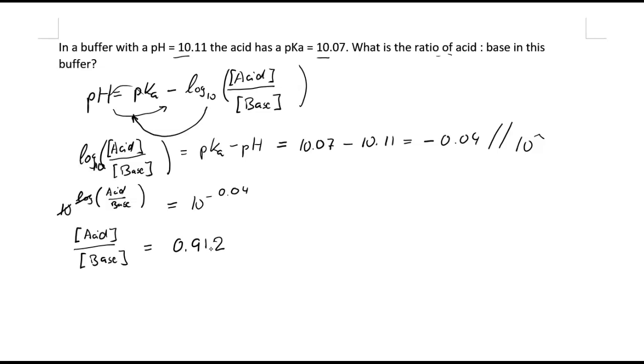So our ratio of acid to base is 0.912 to 1. I can write any ratio like that, and I can also extend that by a factor of 100 to make the numbers nicer. So I just simply extend this fraction times 100 and times 100. So that would be 91.2 parts of acid to 100 parts of base.